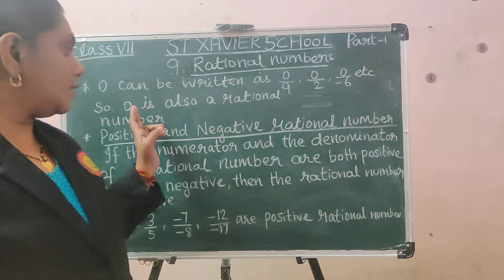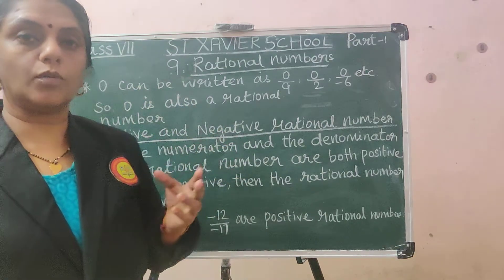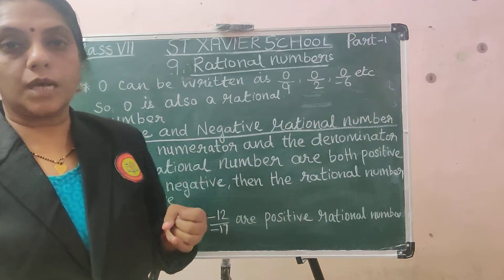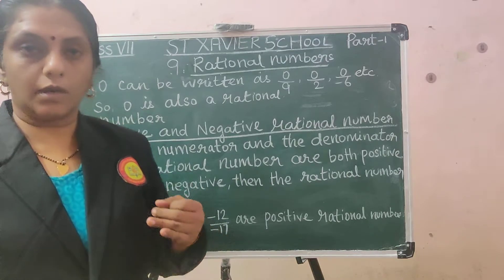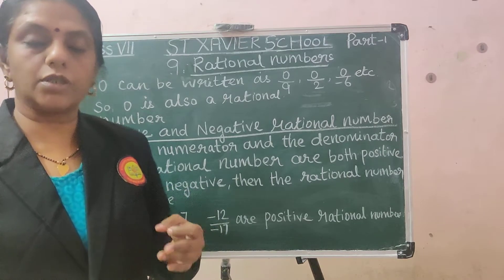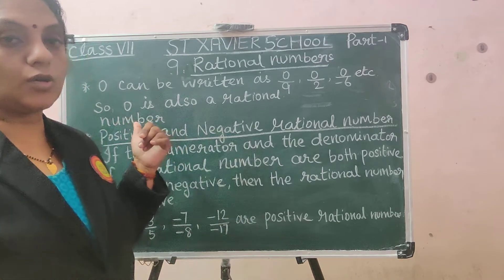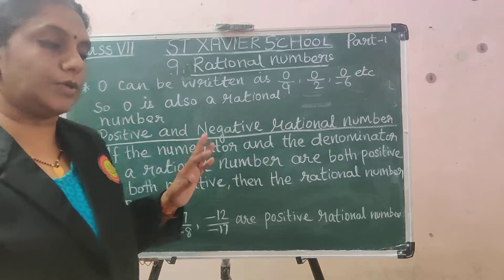Therefore, 0 is also a rational number. So, what are the rational numbers? Integers, fractions, negative of fractions, decimal fractions, and also 0 — they are the rational numbers.